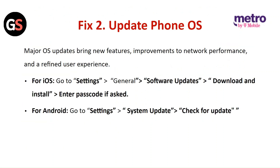Fix 2: Update the phone OS. Major OS updates bring new features, improvements to network performance, and a refined user experience. For iOS, go to Settings, then General, click on Software Update, and tap Download and Install. Enter the passcode if asked.